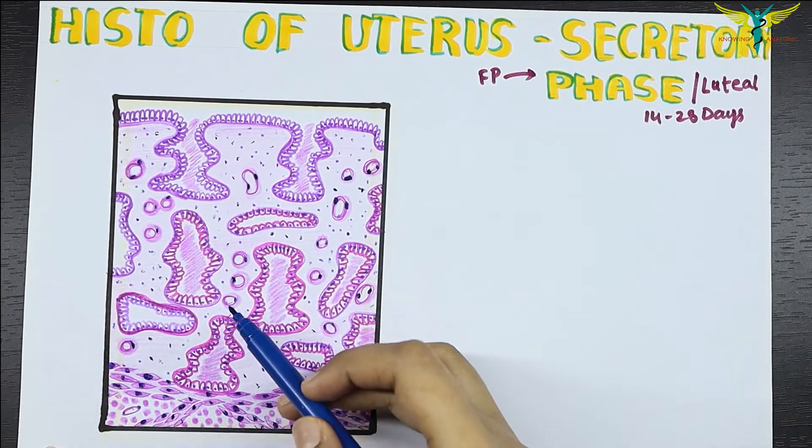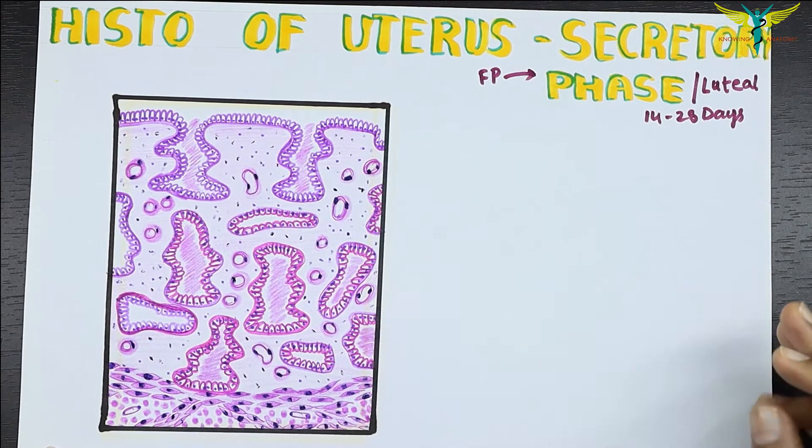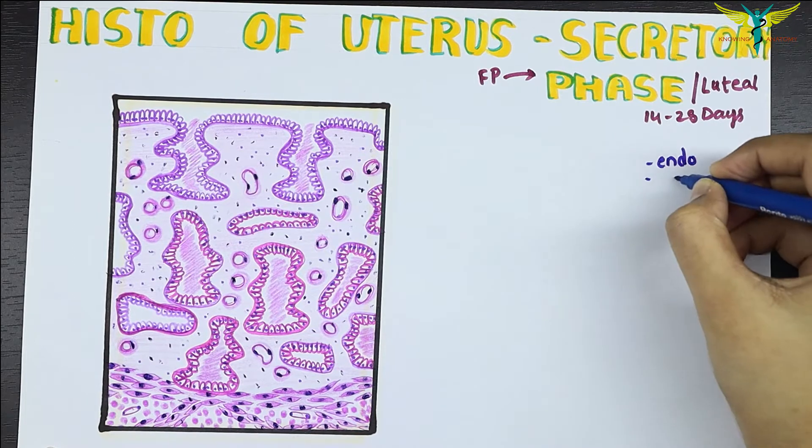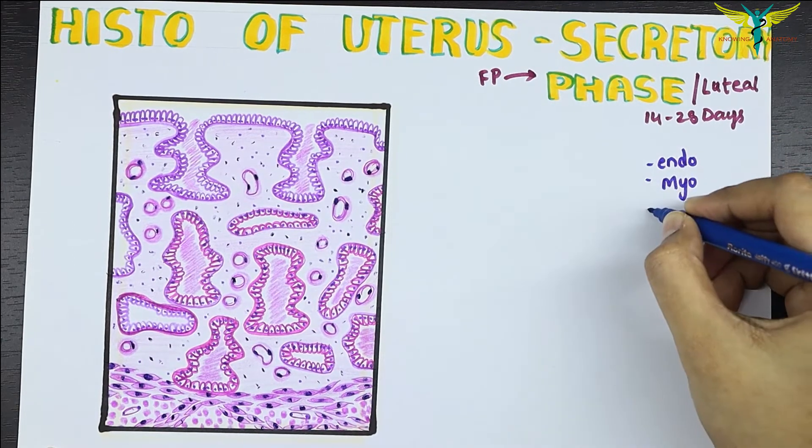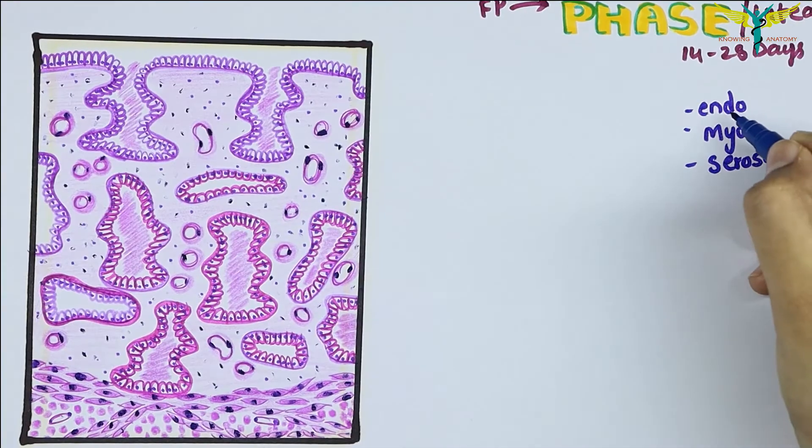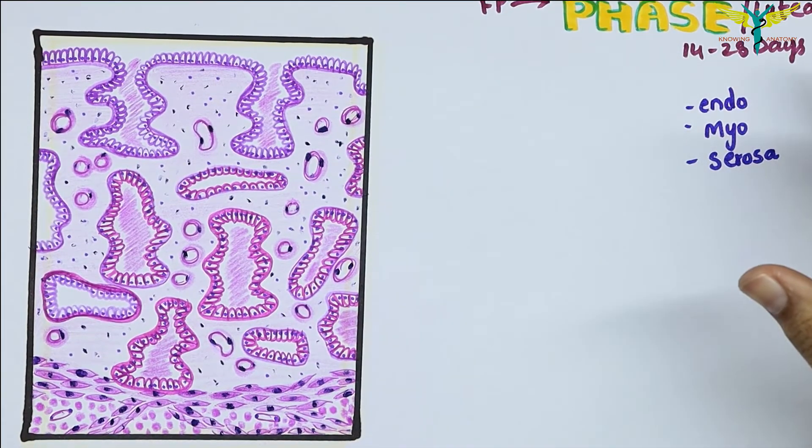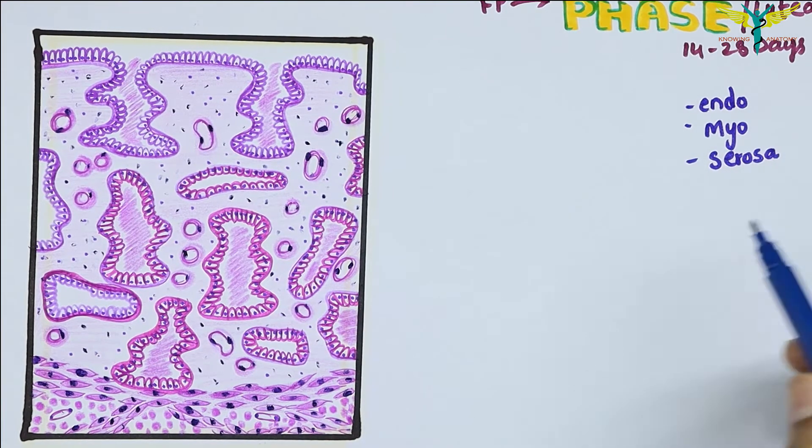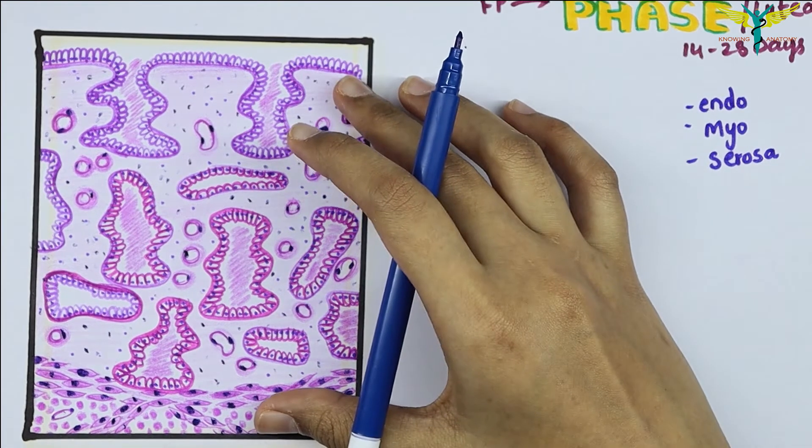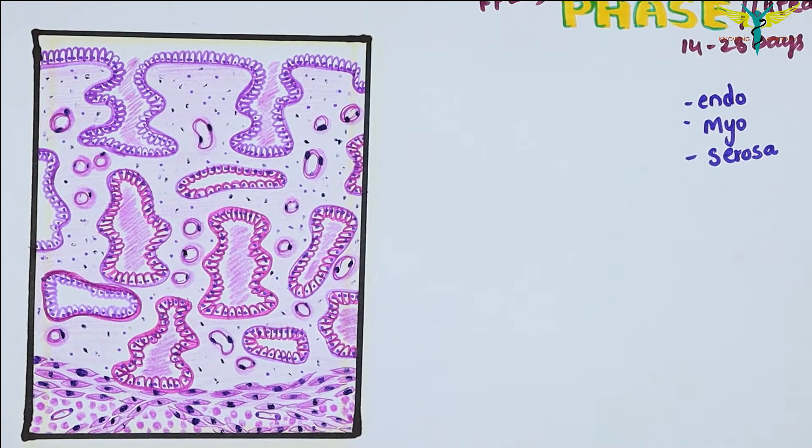It is composed of three layers: the endometrium, which is the innermost layer; the myometrium, which is the middle layer; and the serosa, which is the outermost layer. The endometrium is also called the mucous layer, the myometrium is also called the thick muscle layer, and the serosa is the outer covering. Now let's quickly talk about this diagram and the histology of the secretory phase of the uterus.